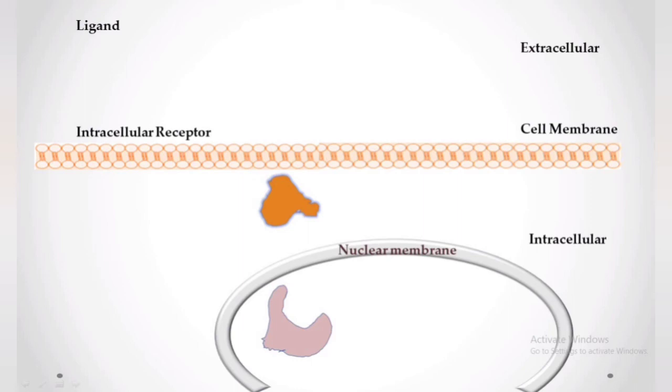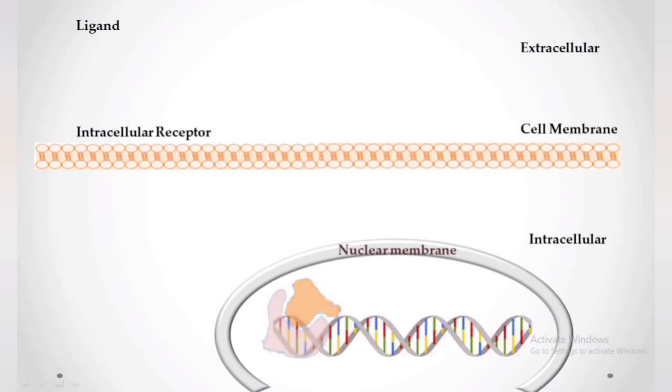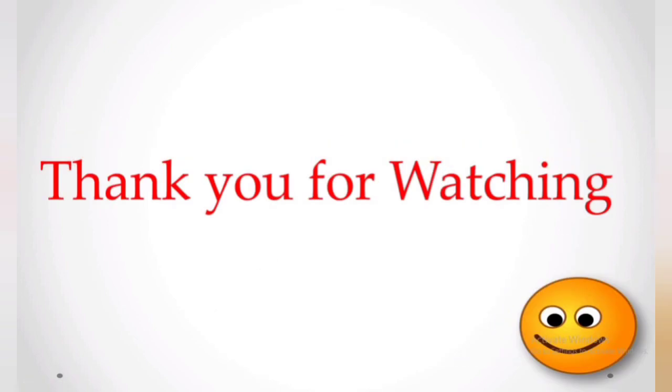Intracellular receptor ligands pass through the cell membrane, enter the cell cytosol, and enter the nucleus by crossing the nuclear membrane. After entering the nucleus, the ligand binds with the intracellular receptor present in it. This can alter the transcription of DNA within the cell, which shows various effects.